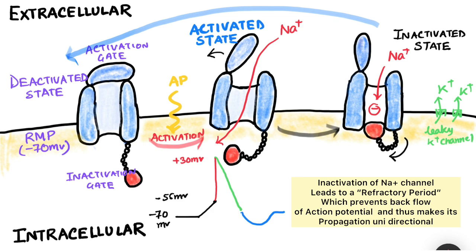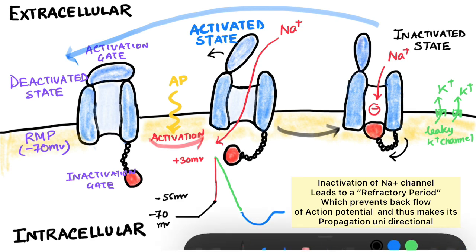The activated state, when there is depolarization, goes into something known as the inactivated state, in which the activation gate remains open but the inactivation gate closes and plugs the sodium channel from the intracellular site. That leads to closure of the channel, and sodium ions can no longer come in. As sodium ions no longer cause influx but potassium is leaving through leaky channels, the net cations within the cell drop and the cell potential drops. This process of taking an activated sodium channel to the inactivated state is known as inactivation.